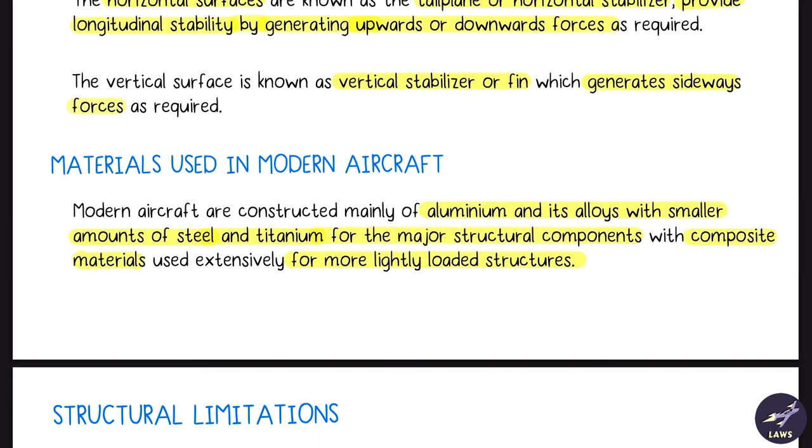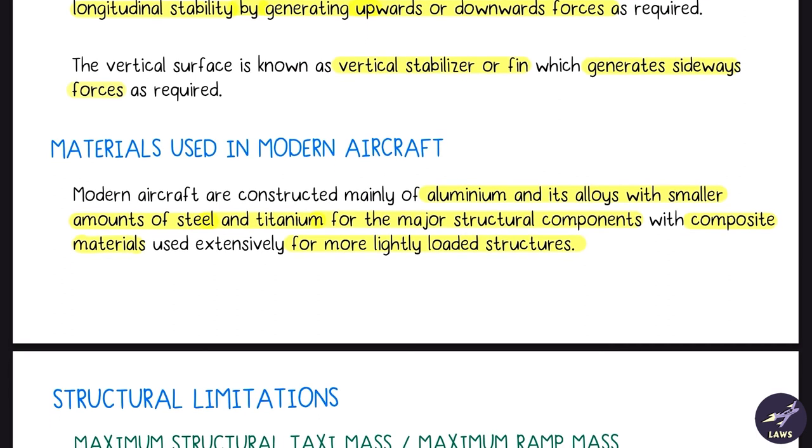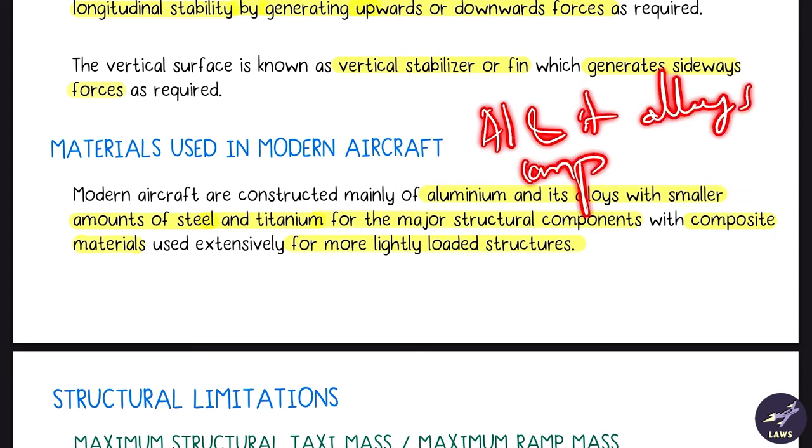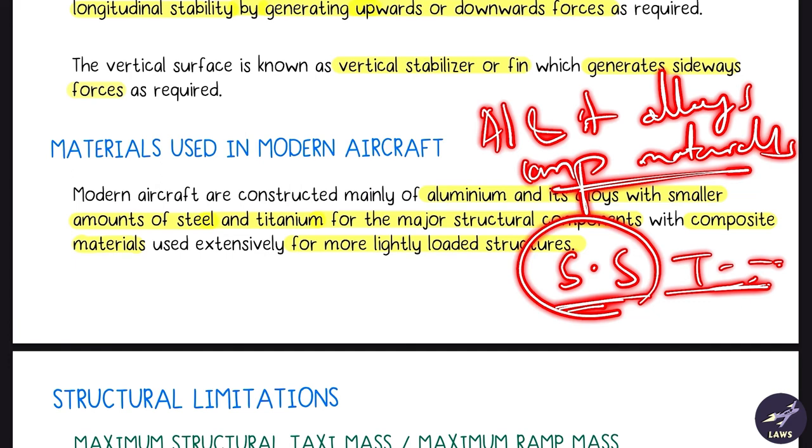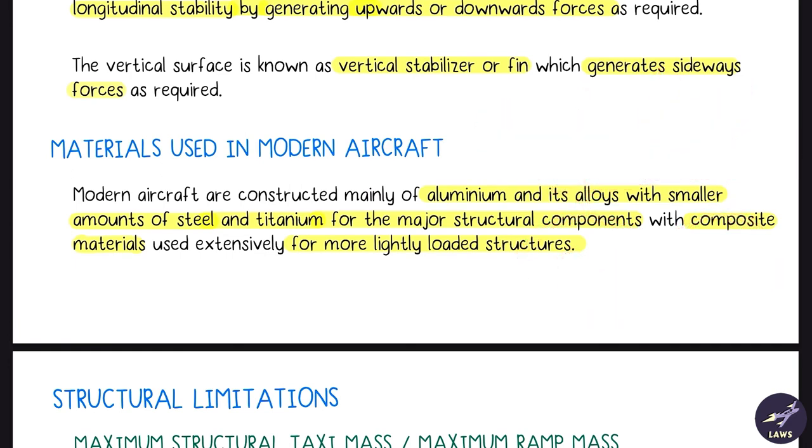Then we look at the materials used in modern aircraft. It is generally aluminum and its alloys. Then we use composite materials for lighter structure. And then stainless steel or titanium for the firewall and where there is very high temperature.